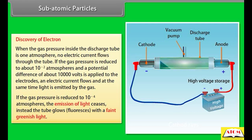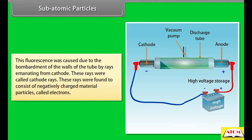Instead, the tube glows with fluorescence, a faint greenish light. This fluorescence was caused due to the bombardment of the walls of the tube by rays emanating from the cathode. These rays were called cathode rays, and were found to consist of negatively charged material particles called electrons.